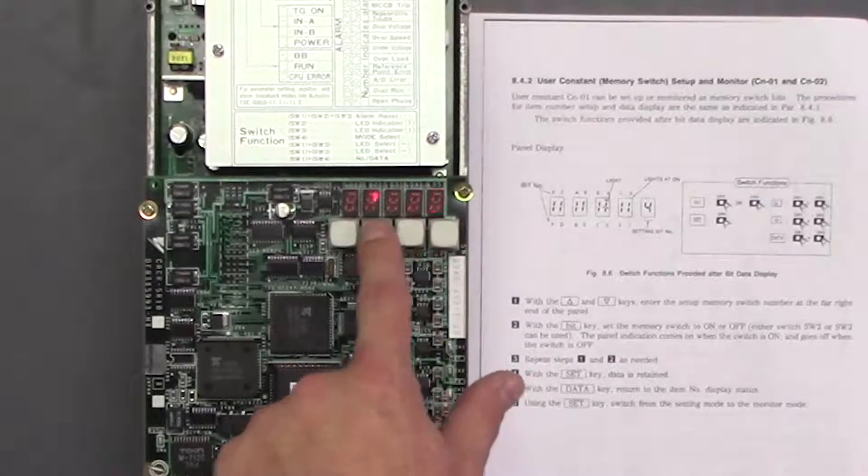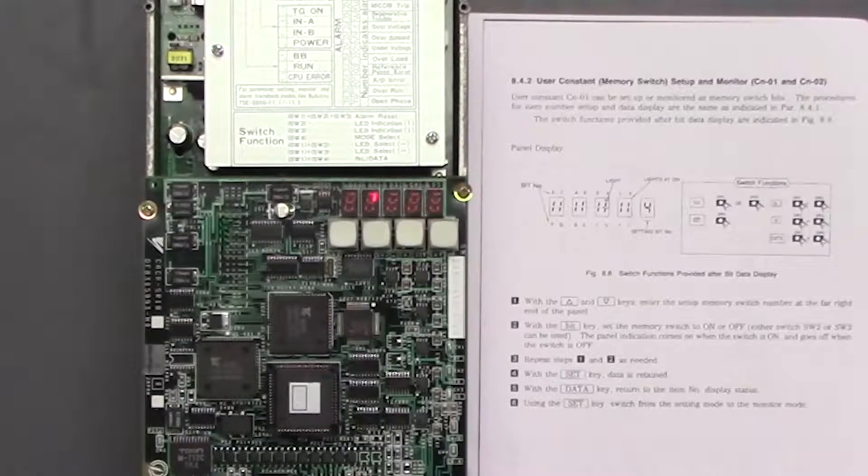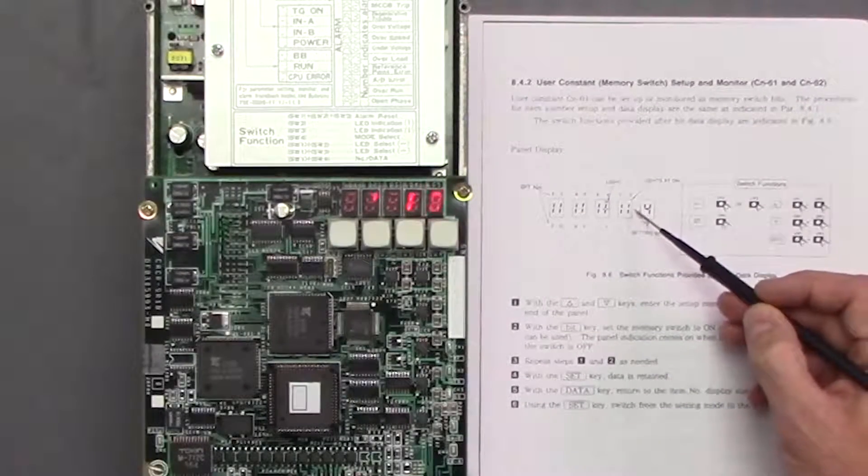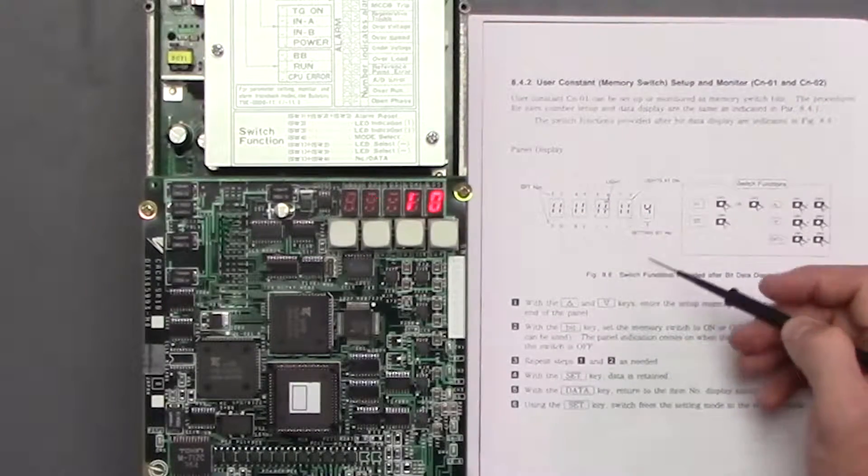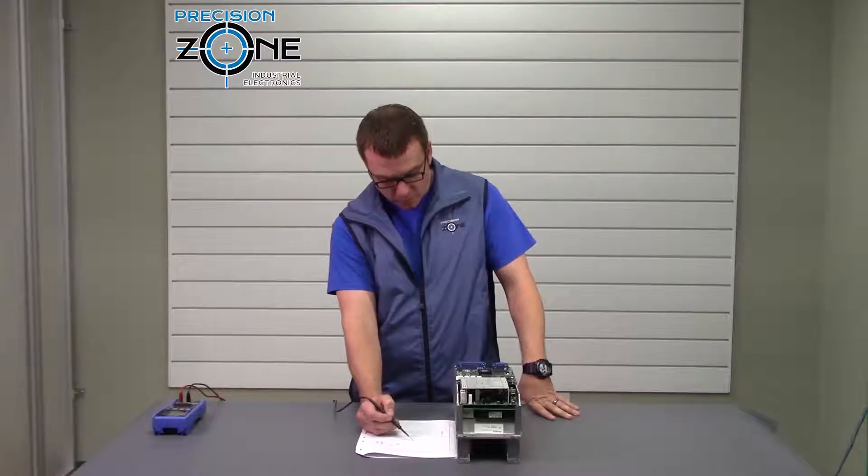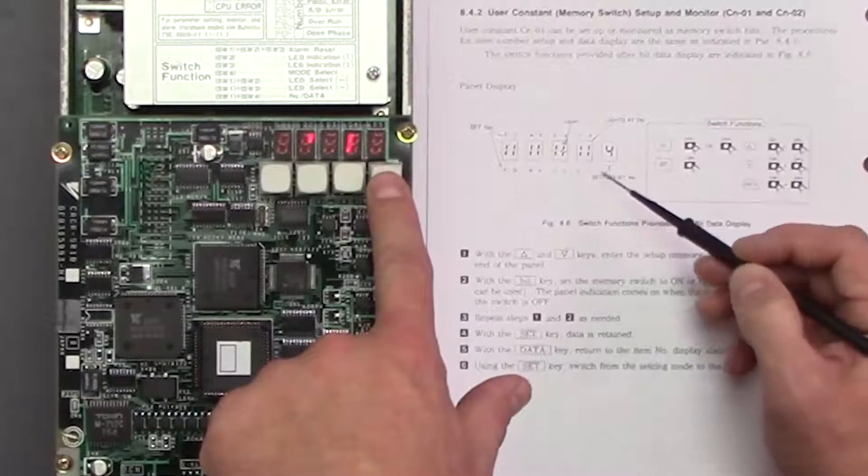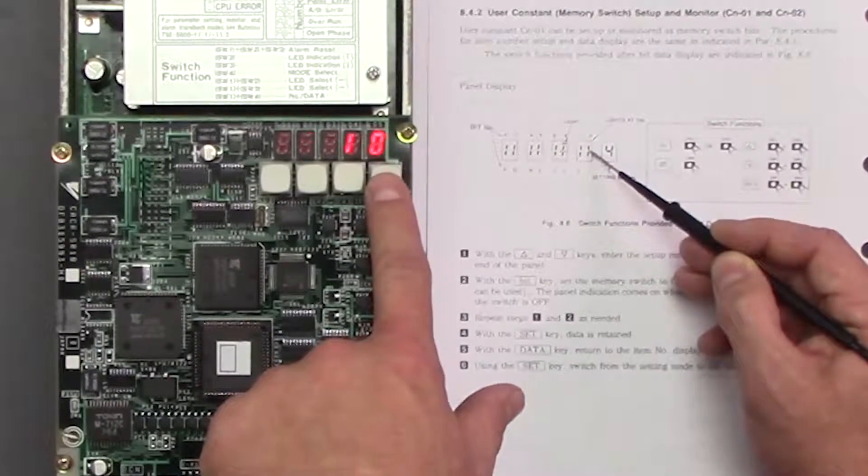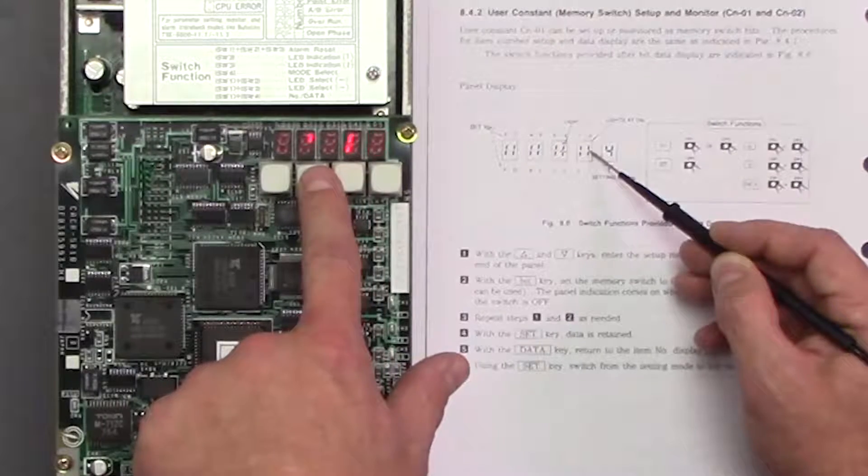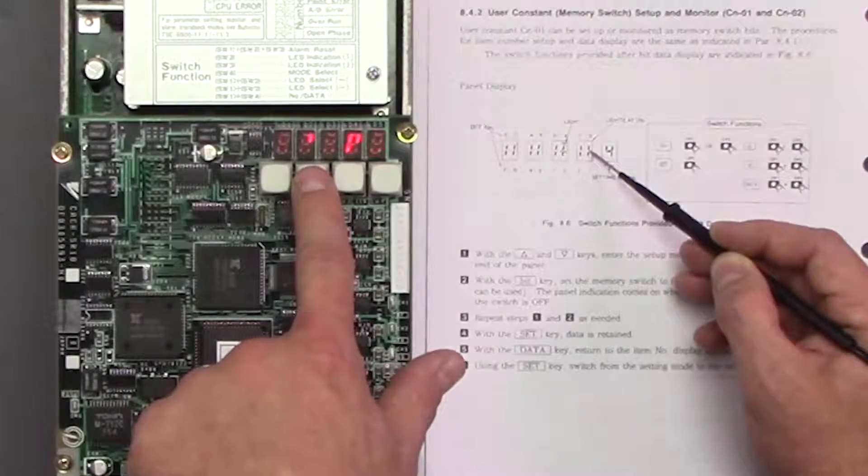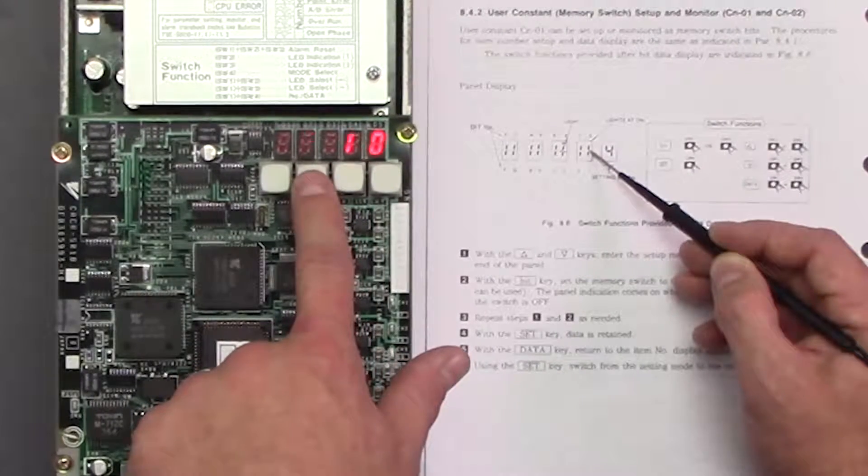And this shows all the bits and that's the main thing I want to talk about is getting and changing the bits. So right now we're at bit setting number 0. So that will change this bit 0 here. So if I press either one of these switches it's going to turn on and turn off that bit.